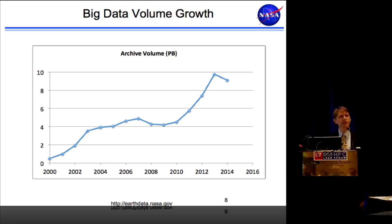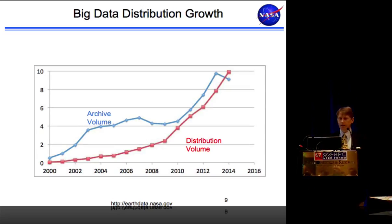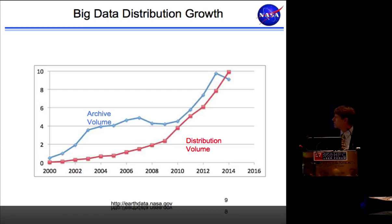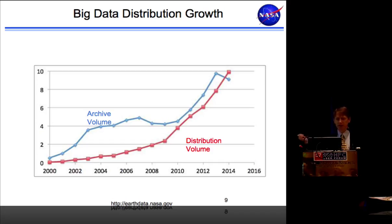The distribution volume has also been growing significantly. Until recently it was always a little bit less than the archive volume, but you can see the inflection point jump up around 2008-2010 — that was when we had all the data on disk, which also allowed us to grow our user community. This past year, distribution has crossed over with the archive, meaning we're now distributing more data than we're archiving.